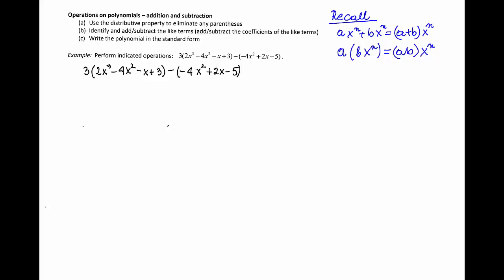Let's recall how we add or subtract like terms. The like terms are the terms that have the same variable in the same exponent. So if I need to add two like terms like ax to the power n and bx to the power n, we add just coefficients a plus b and multiply by x to that power.